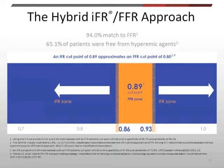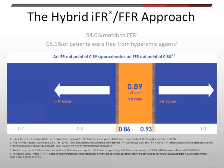IFR can be used in two ways: with a single cut point, or using a so-called hybrid approach. This hybrid approach uses a combination of IFR and FFR to diagnose which lesions warrant stenting. If the IFR value is greater than 0.93, we defer the patient — no stenting. If the value is less than 0.86, stenting is recommended. In the mid-zone between 0.86 and 0.93 — the IFR grey zone — patients undergo FFR measurement. Using this approach achieves a 94% classification match with FFR as the gold standard.